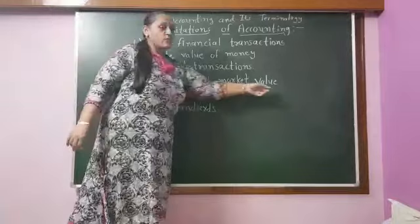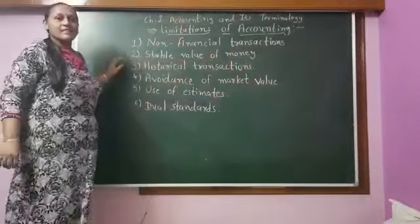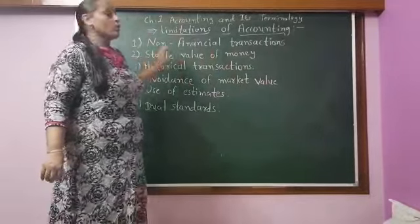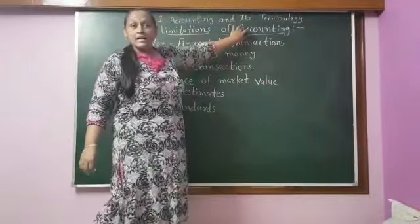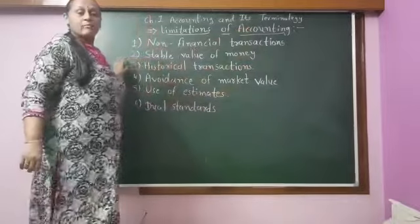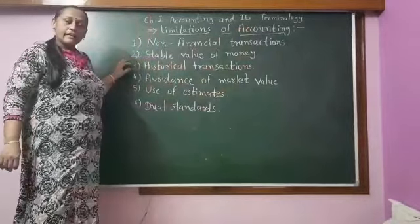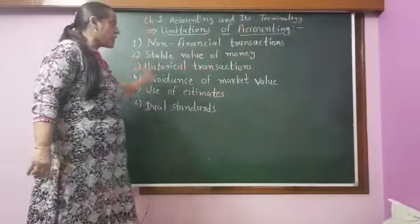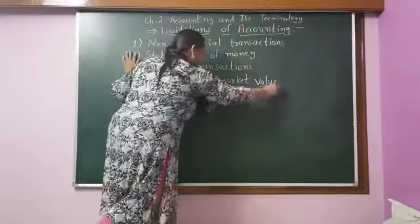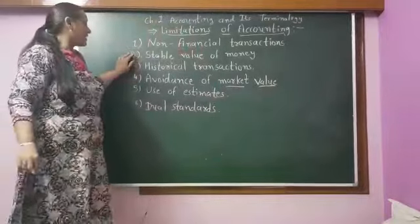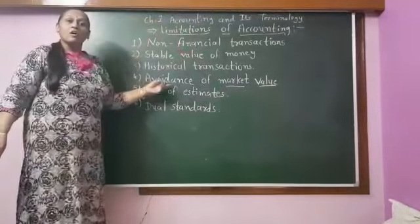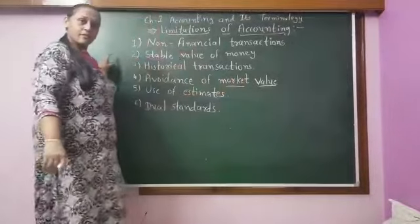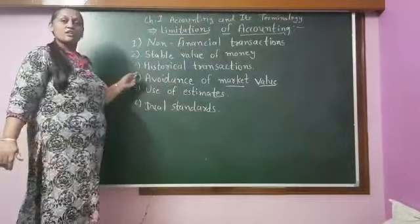The fourth limitation is avoidance of market value. Whenever we are buying an asset, we are recording it in the books of account at the first price only. As we know, the price of that asset is increasing day by day. But when we write books of account, we are avoiding the market value of that asset and writing it only at cost price. So avoidance of market value is another limitation of accounting.